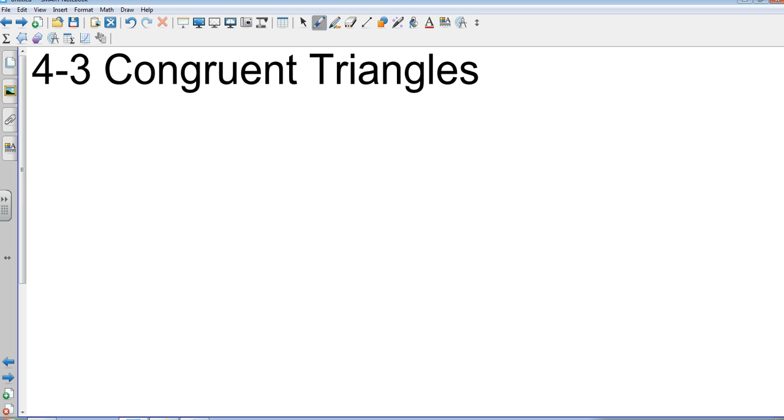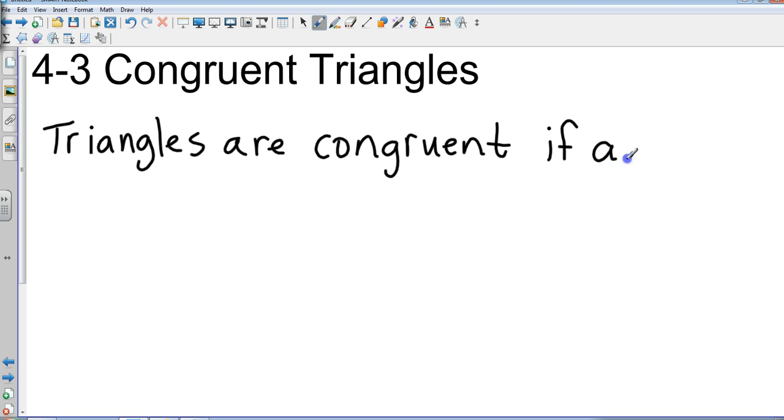There is one statement that has two qualifications, and the statement is this: two triangles, or let's just say triangles, are congruent if and only if